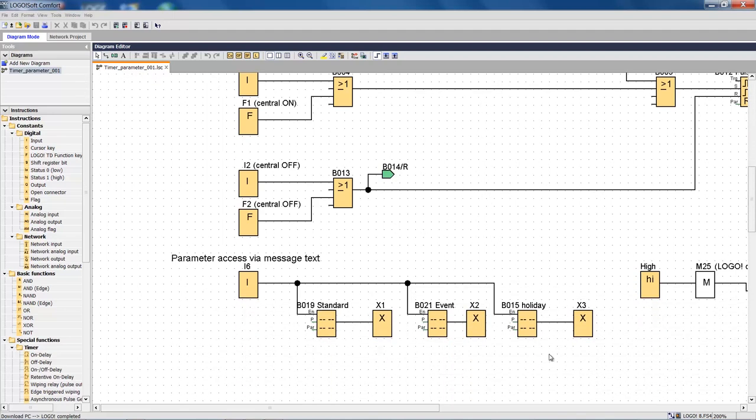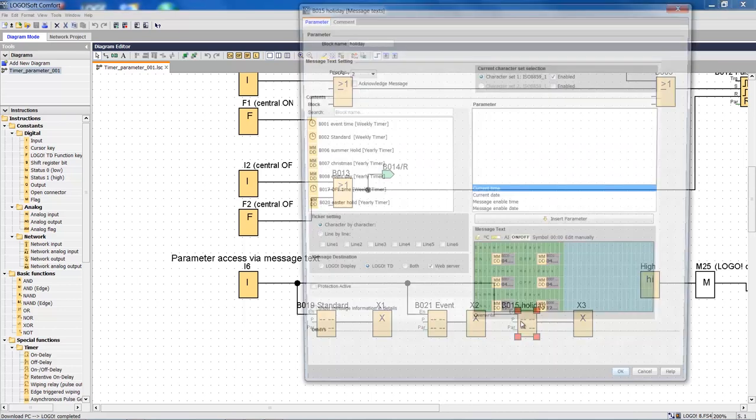And here, finally, I have various switching parameters displayed in message texts. In regard to vacation periods, for example, I can enter when the summer vacation and Christmas, winter and Easter holidays will be and thereby override the set automatic switching.